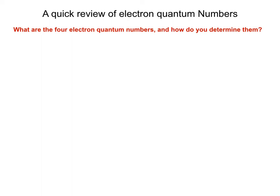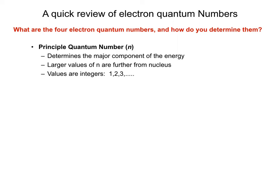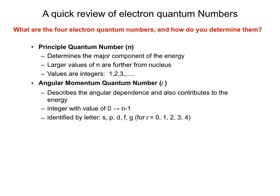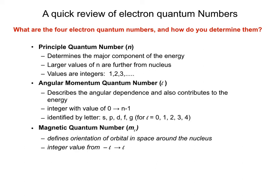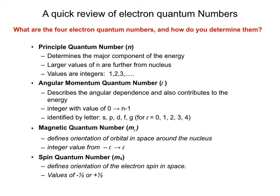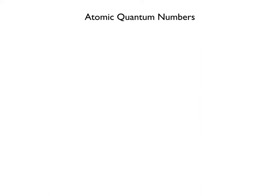Let's review our electronic quantum numbers. There are four: the principal quantum number n (integers 1, 2, 3…) determines energy and size; the angular momentum quantum number l (0 to n-1, abbreviated s, p, d, f, g…) describes shape; m_l (values from -l to l) tells us how many orbitals in a set; and m_s (±½) is the spin quantum number.